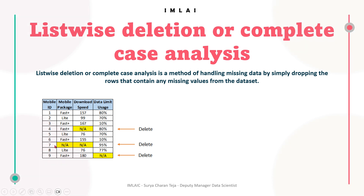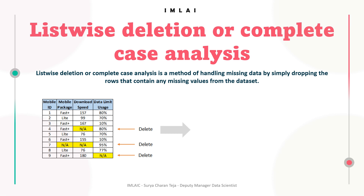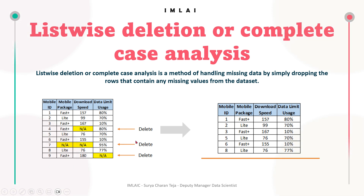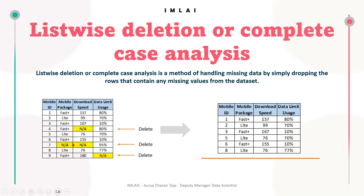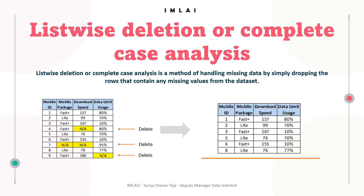The complete row itself is removed from the dataset. For example, in our dataset, rows four, seven, and nine contain NA values. After applying this method, those rows are removed — the fourth row has been removed, the seventh row has been removed, and the ninth row has been removed. This is what we call list-wise deletion or complete case analysis.